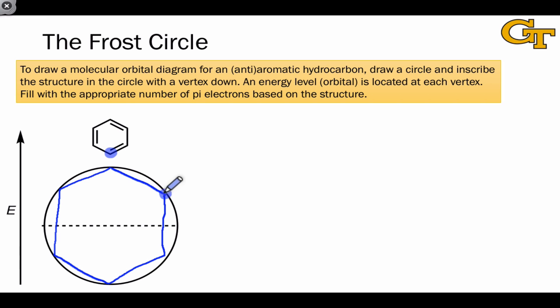At each point where the inscribed structure hits the circle, we have an orbital energy level. Notice how these corners correspond to the atoms within the molecular structure. Both of them form the shape of a hexagon.